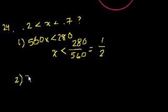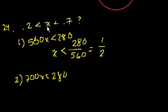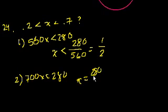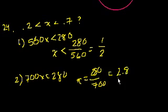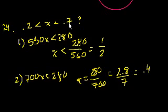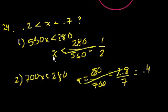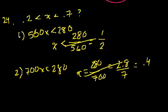Statement 2 says 700x equals 280. Same thing — you can solve for x, so you can determine whether x is between those two numbers. If you want to verify: x equals 280 over 700, which equals 2.8 over 7, which equals 0.4. So yes, it is between 0.2 and 0.7. But remember, the question doesn't have to be affirmative — you just need to determine if the data is sufficient to answer it. Each statement alone is sufficient, so the answer is D.